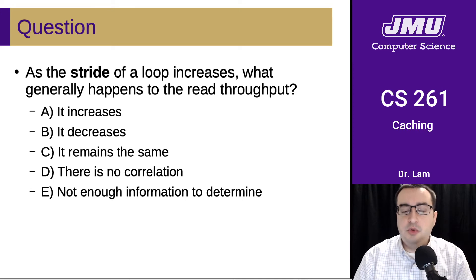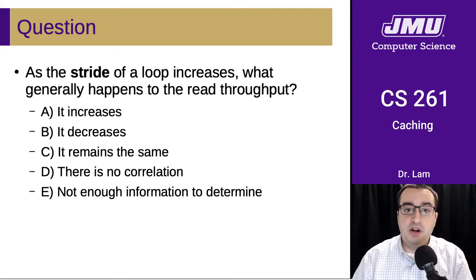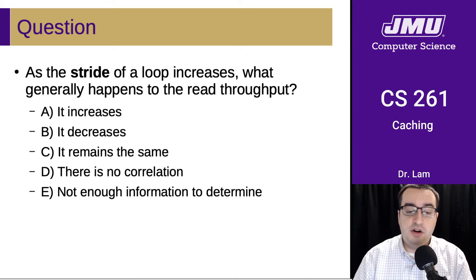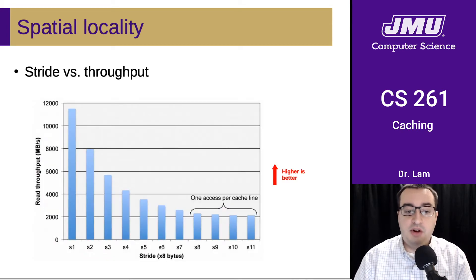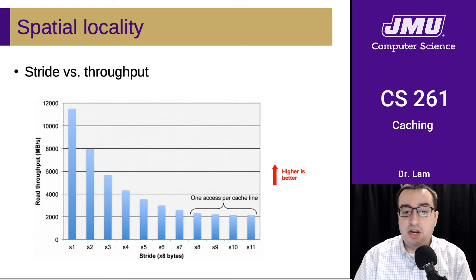As we are skipping more and more things, we are basically depriving ourselves of the benefit of having the caching system, which brings in things that are close to each other. So as the stride of the loop increases, the read throughput is going to go down because we're not taking as much advantage of our caches. We end up with a graph showing a gradual decrease in read throughput until it levels off, where we're essentially doing only one access per cache line and not taking advantage of our cache at all.